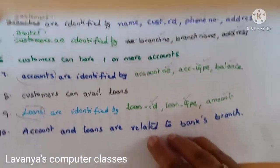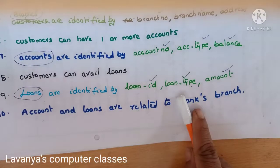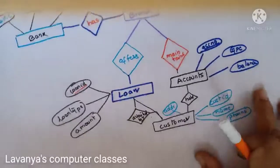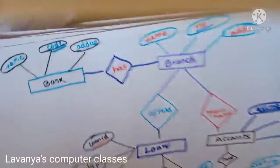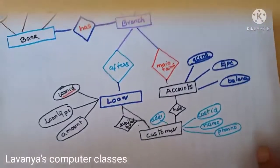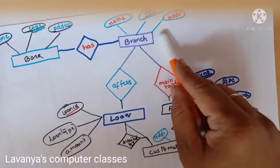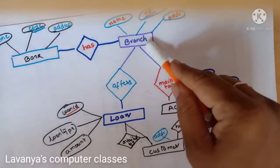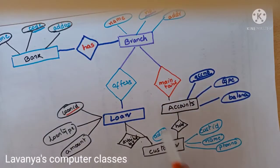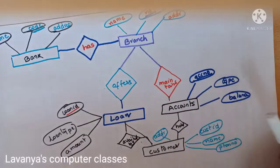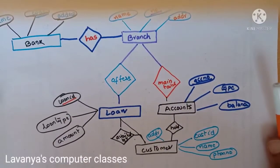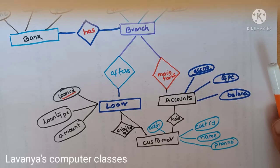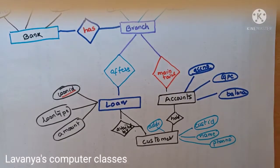We identified the relationships between the entity sets and drew the diagram. Bank has branch; branch offers loans to the customer; branch maintains accounts for the customers. This is the complete ER diagram concept. Thank you for watching. Please subscribe, share, and like the channel.